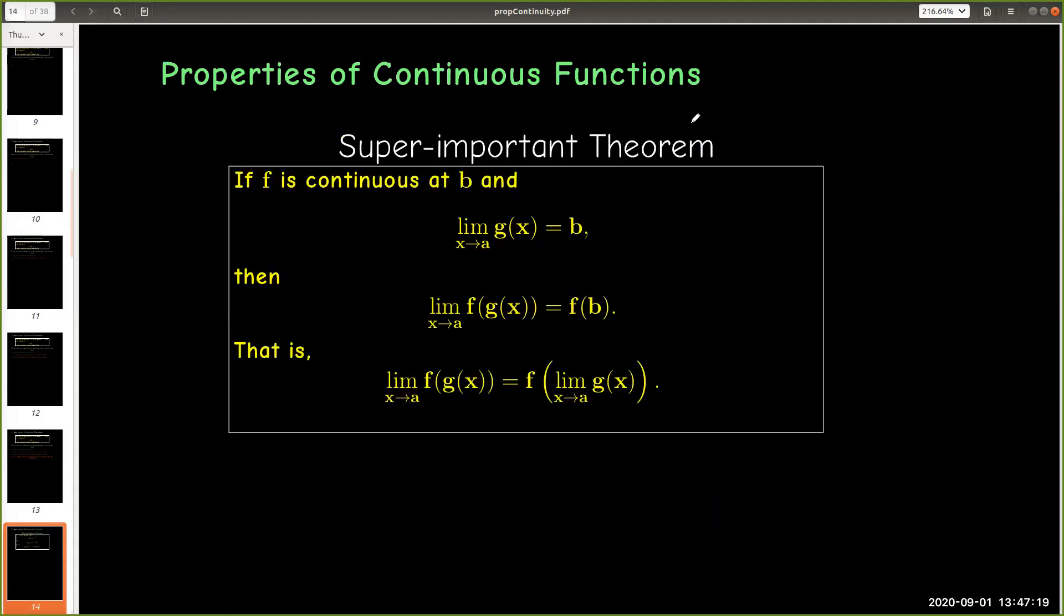Now there's two super important theorems that we should talk about involving the composition of functions. Let's read this one first and then talk about it. If f is continuous at b and the limit as x approaches a of g of x equals b, then the limit as x approaches a of f of g of x is f of b.